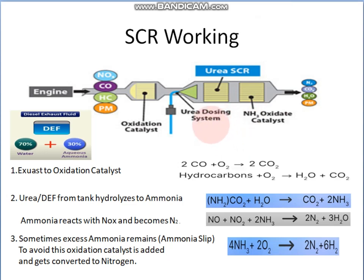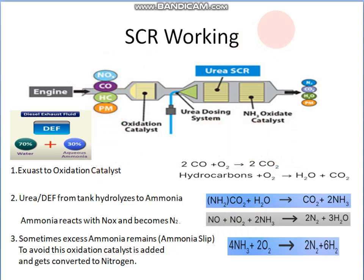Now the main part: the ammonia reacts with the NOx and harmful nitrogen oxides, converting them to nitrogen gas, which is harmless. Some water is also released in the process. Sometimes there is excess ammonia remaining, called ammonia spill. To avoid this, an oxidation catalyst is added, which converts it to nitrogen. Along with this, other gases like CO and hydrocarbons are also significantly reduced, but mainly NOx is reduced.